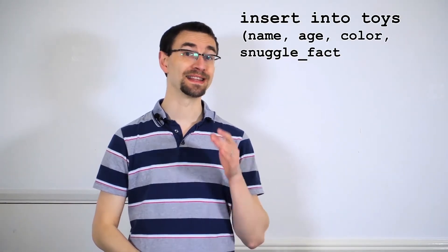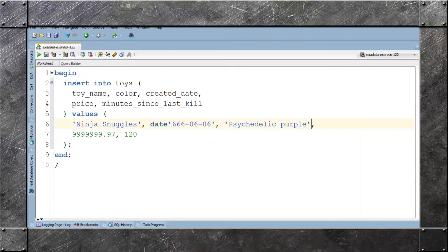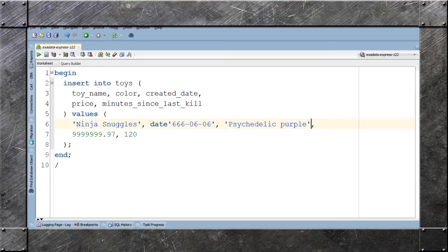To avoid this confusion you can explicitly list the columns after the table name. This makes your code more robust and easier to see if you've made a mistake.